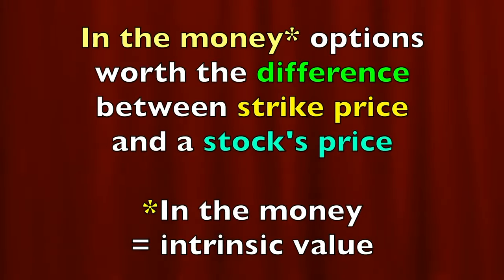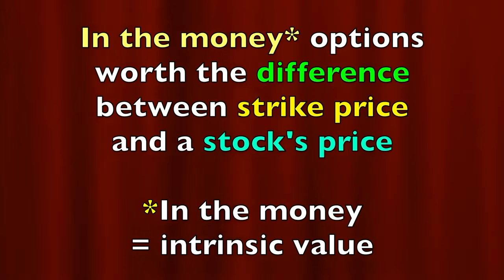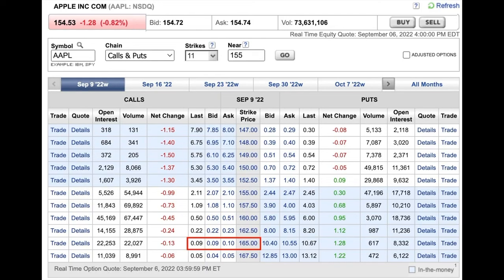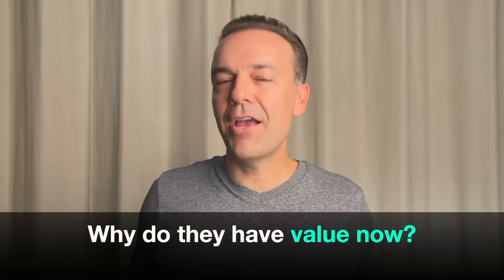So let's do a brief review. At the expiration day, the in-the-money options will be worth the difference between the strike price and the stock's price — otherwise known as the amount that the option is in the money, or its intrinsic value. And the out-of-the-money options will all be worthless. But before expiration, even those out-of-the-money options — for example, the $165 call options that expire in three days — still have some value because there's a slim chance that Apple could go all the way up and reach that $165 call option strike price in the next three days. That's why it's currently selling for 9 cents per share with three days left until expiration.